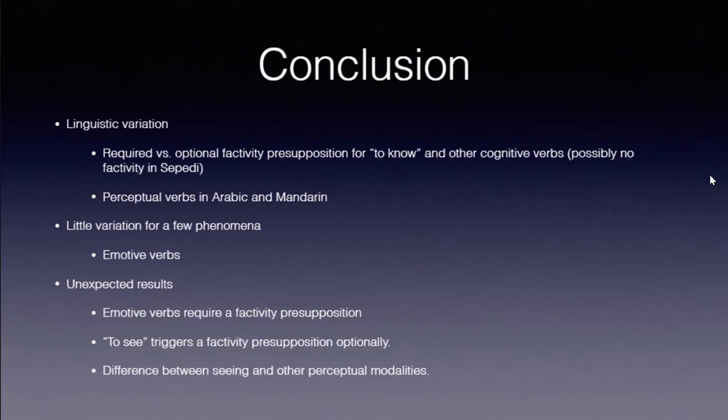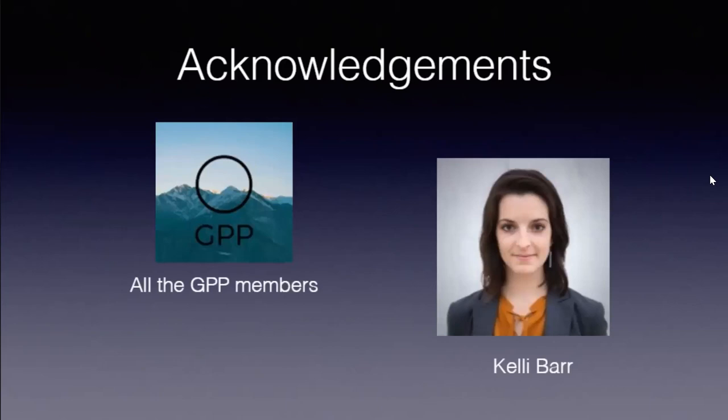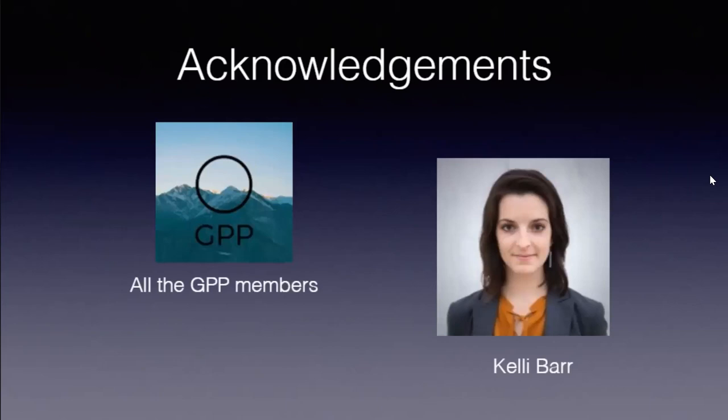There are a number of unexpected results. Emotive verbs trigger factivity presuppositions robustly. The fact that 'to see' triggers factivity presuppositions optionally — not like 'to know' — was surprising, as I would have expected a deep connection between the two. And there are differences across other perceptual modalities I would not have anticipated. This is a fairly robust pattern except in Mandarin and Arabic, where these verbs are treated in a non-factive manner. I'd like to thank my collaborators, who have been instrumental in developing these studies. Thank you for your attention.